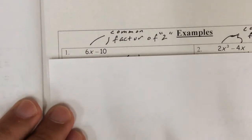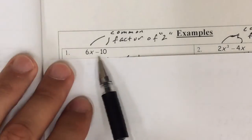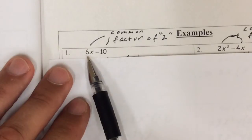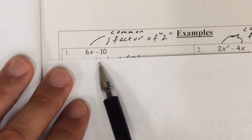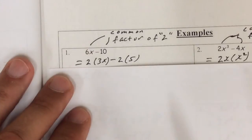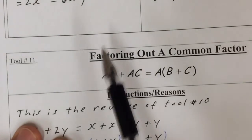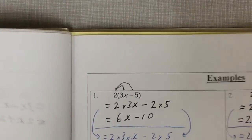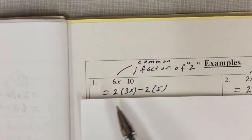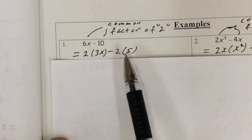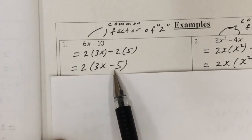Example 1: 6x minus 10. It doesn't look like there's anything common right away, but 2 is a factor of both 6 and 10. So we can write this in the form a times b plus a times c. Now that we've got the 2 out in front, we can take it out and write down what's left over. So 2 times 3x minus 5 is the factored form.